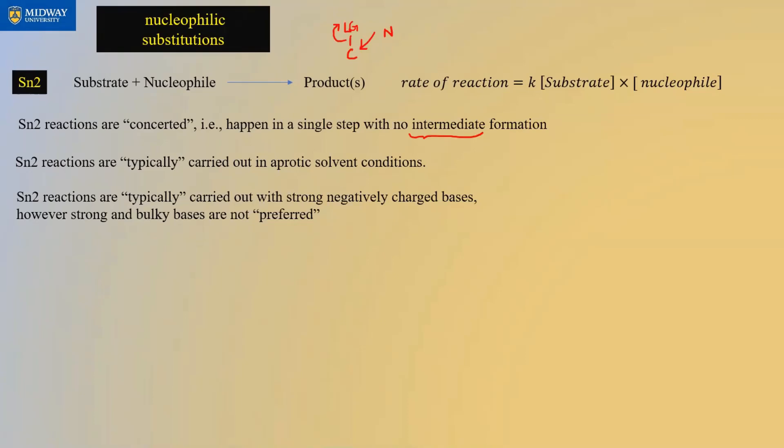SN2 reactions are typically carried out with strong, negatively charged bases. I showed you negatively charged bases, weak bases, extremely strong bases, and bulky strong bases. Strong bases are acceptable, but if the base is both strong and bulky, you won't be able to do an SN2. Strong and bulky bases at the same time are not preferred.